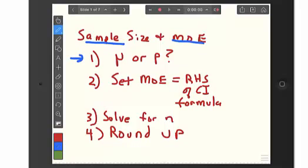The first thing we need to know is are we estimating the population mean or the population proportion? The questions are going to say something like, what's the required sample size to estimate, for example, the population mean will be in there somewhere, or the population proportion.